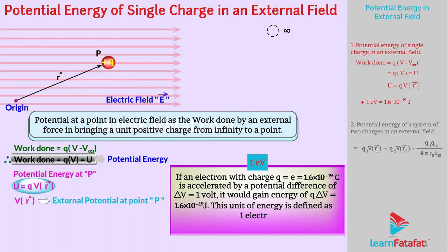This unit of energy is defined as 1 electron volt or 1 eV. That is 1 electron volt equal to 1.6 into 10 raised to minus 19 joules.